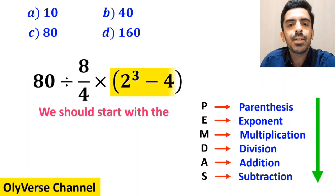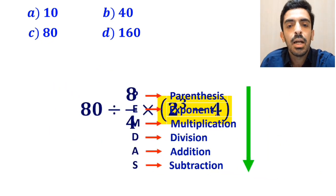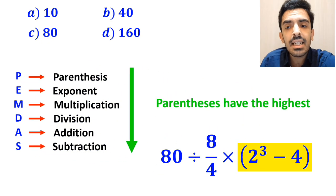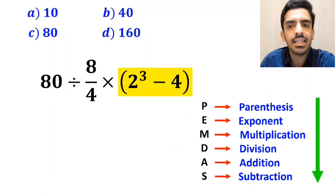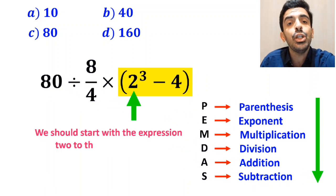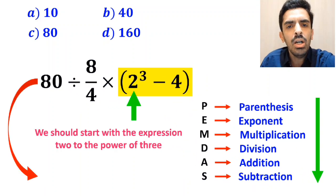So we should start with the expression inside the parentheses first, because parentheses have the highest priority. Inside the parentheses we should start with the expression 2 to the power of 3.